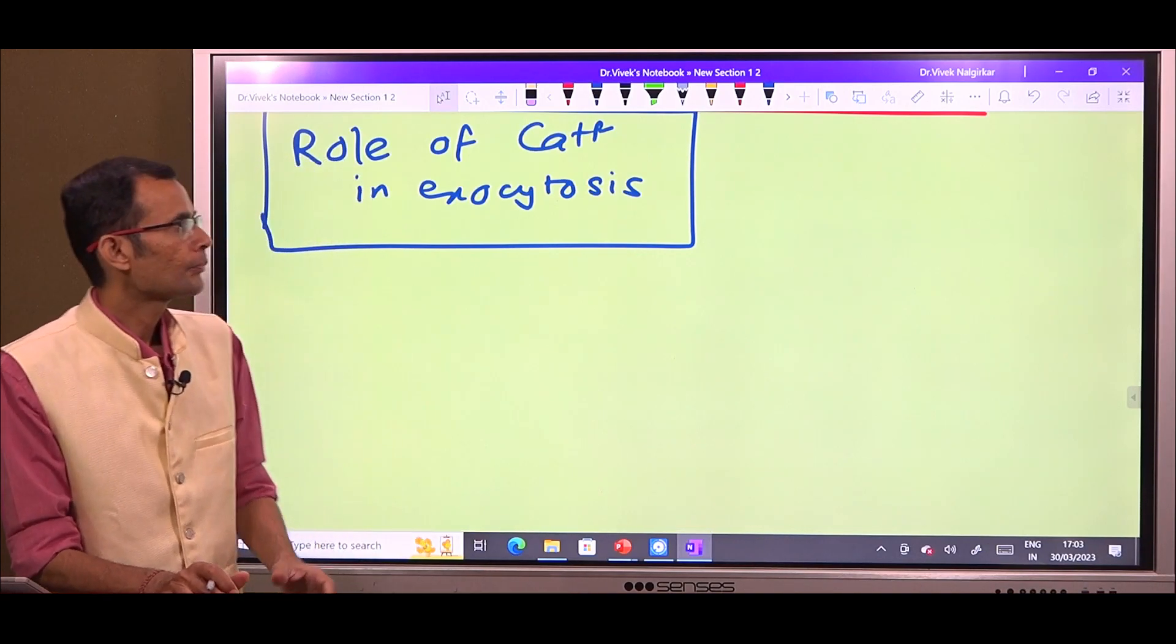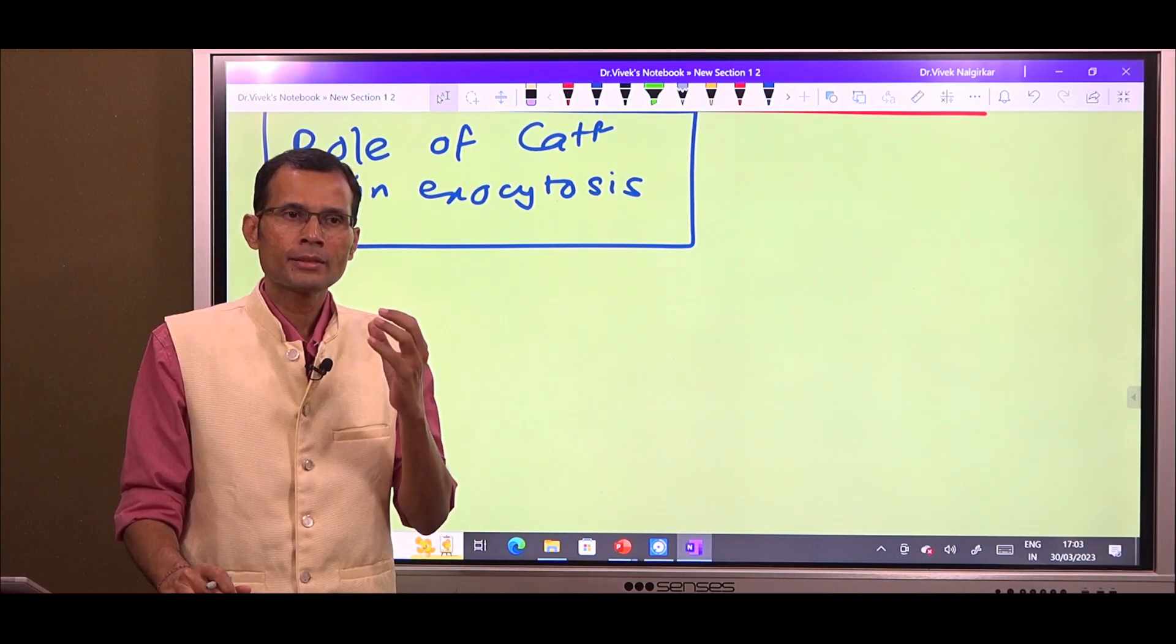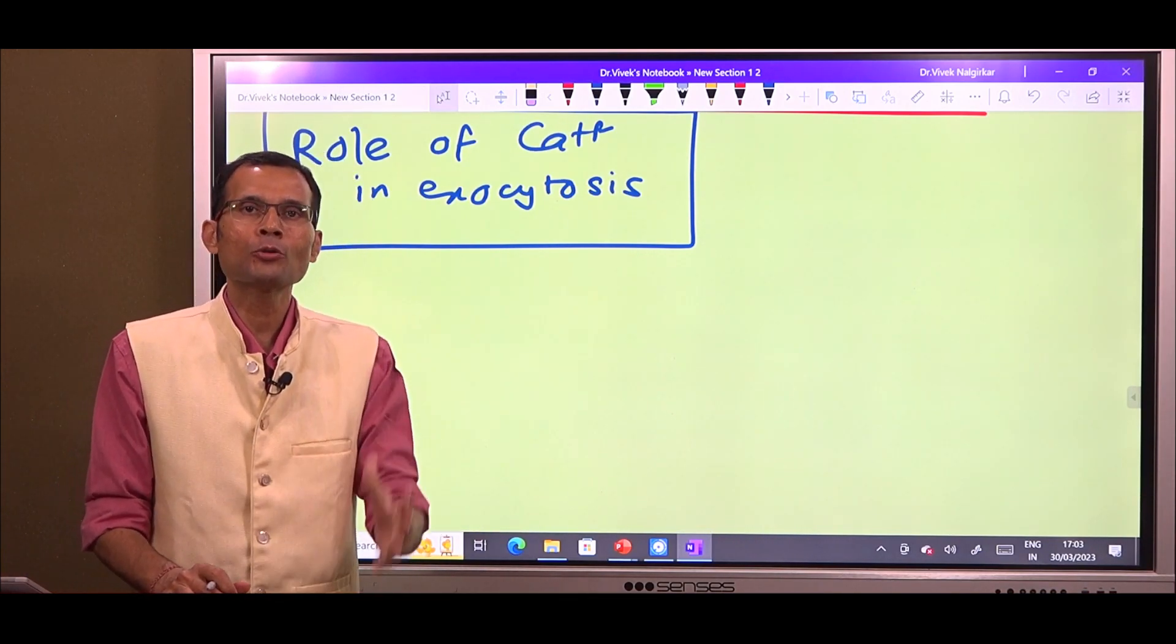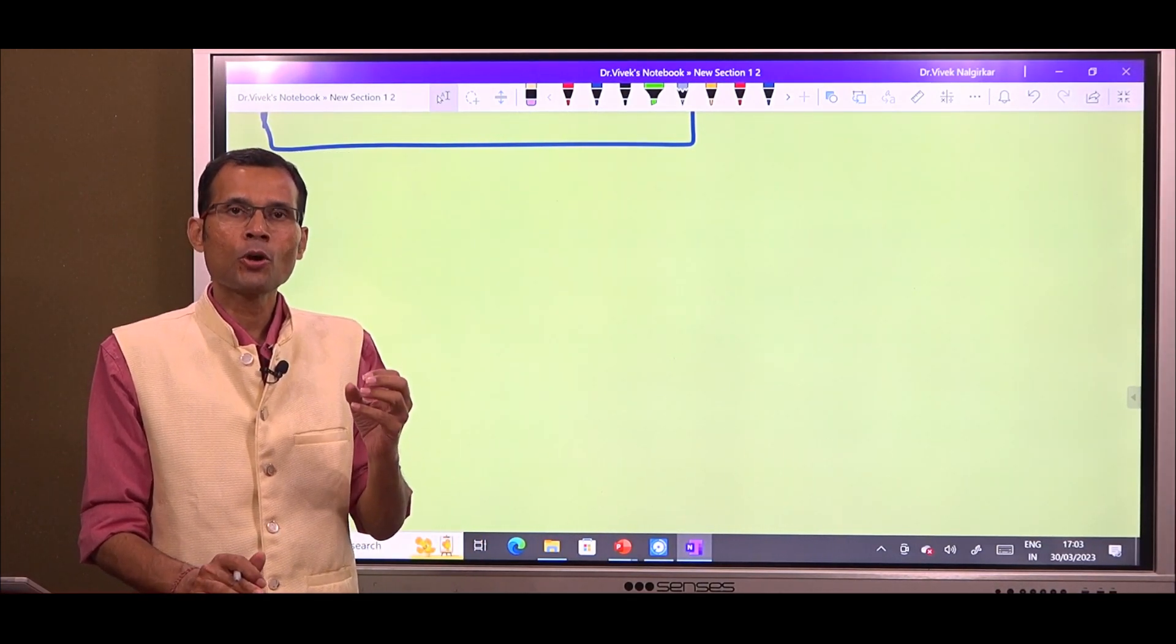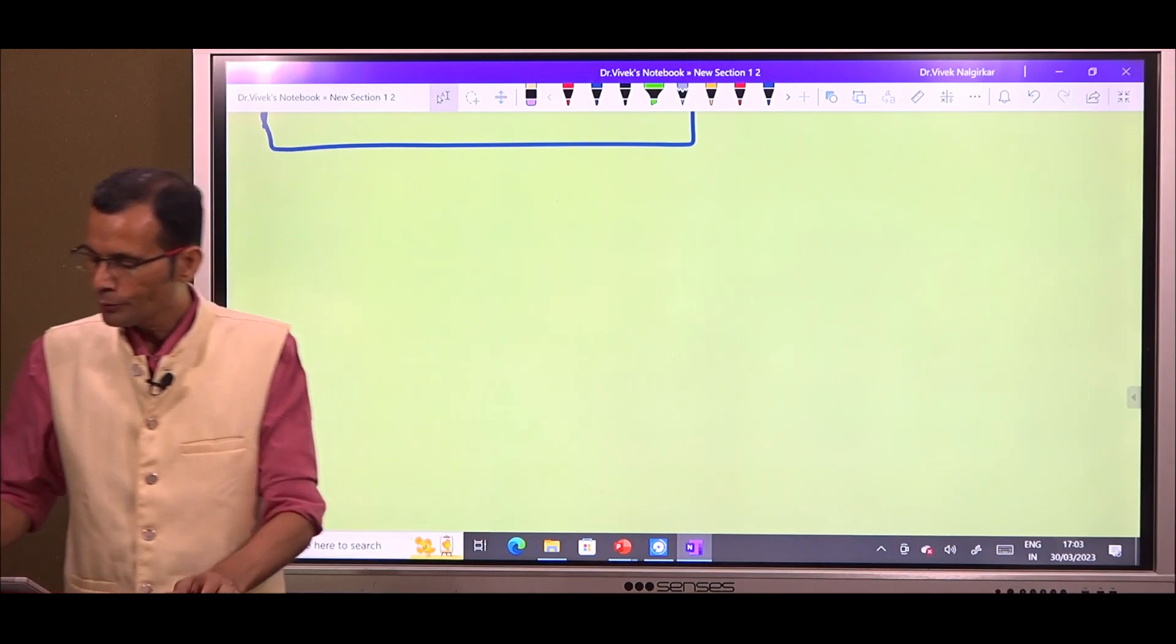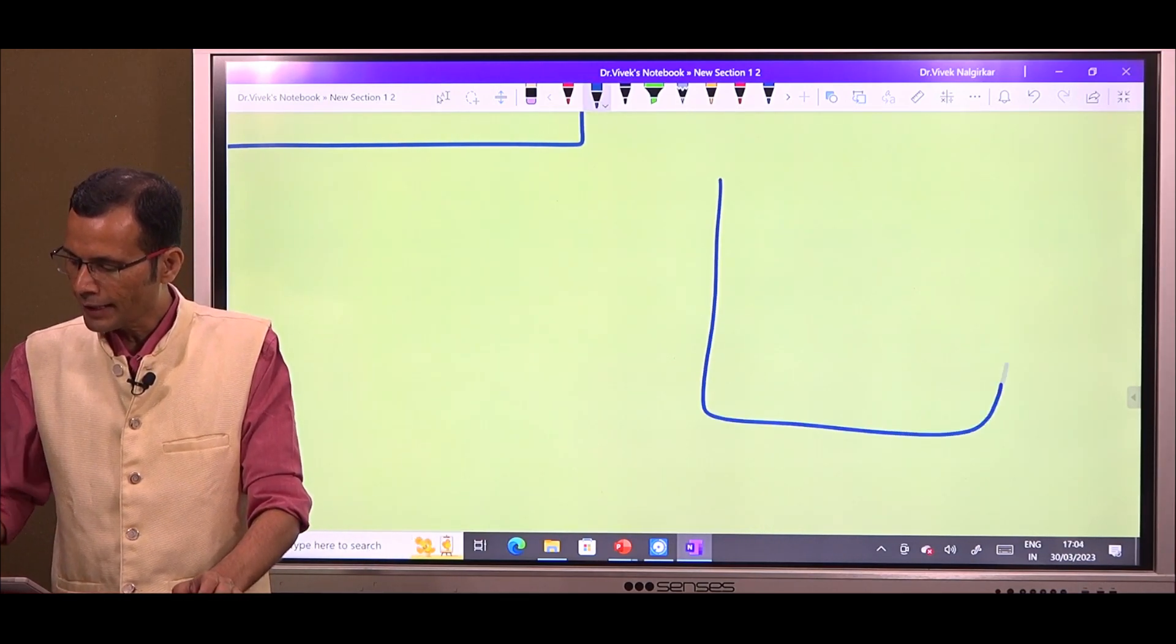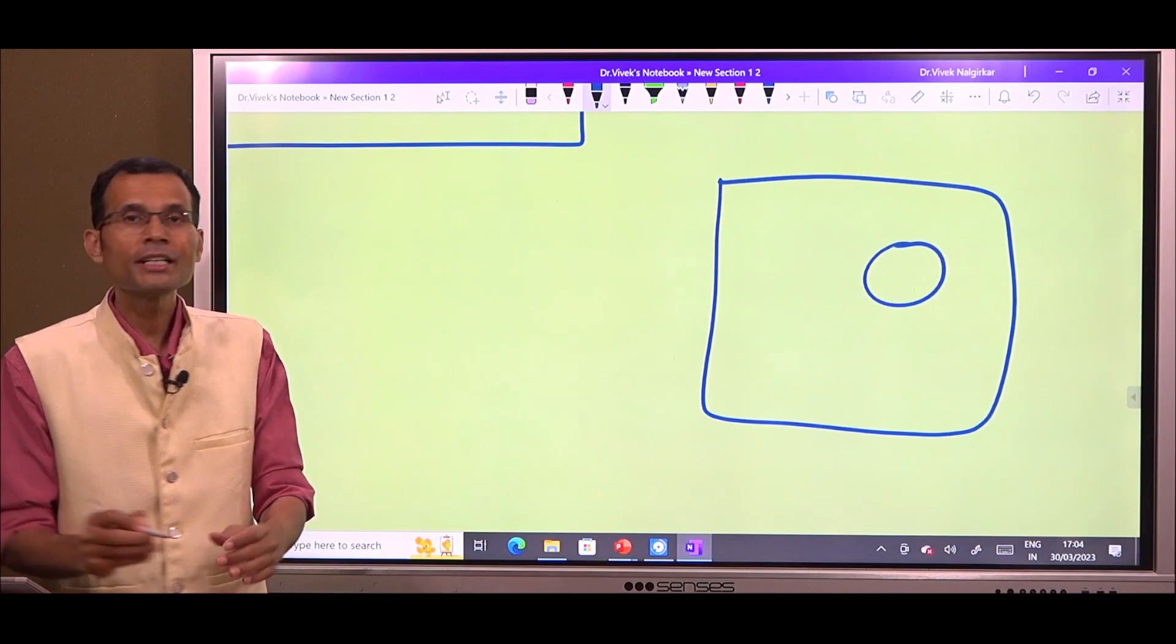What is exocytosis? When some substances are thrown out of the cell, which substances are thrown out? Those substances or chemicals or molecules which are present inside a cell within a vesicle.